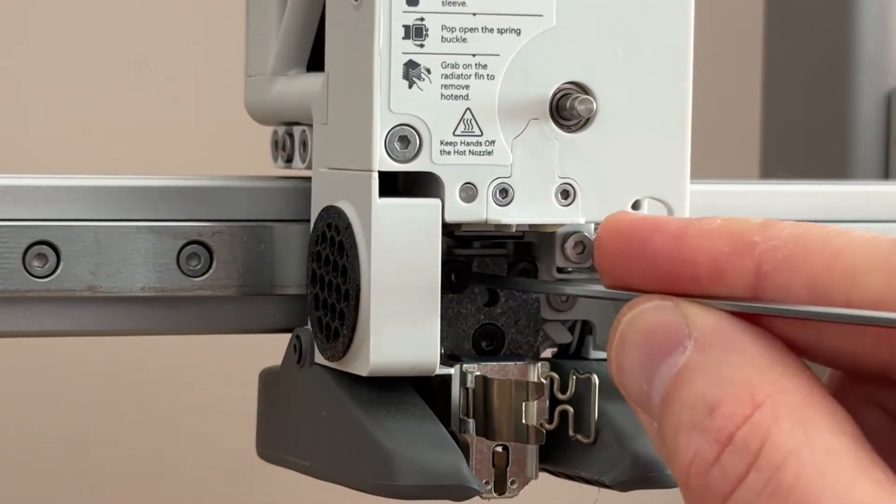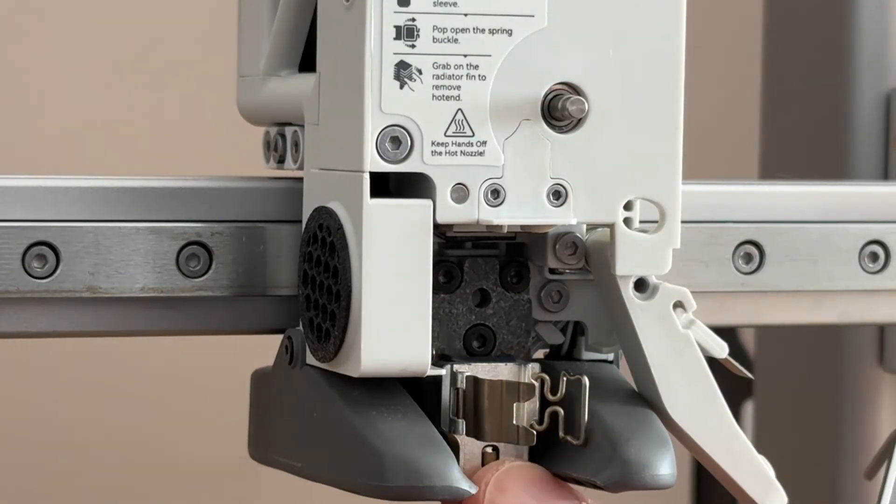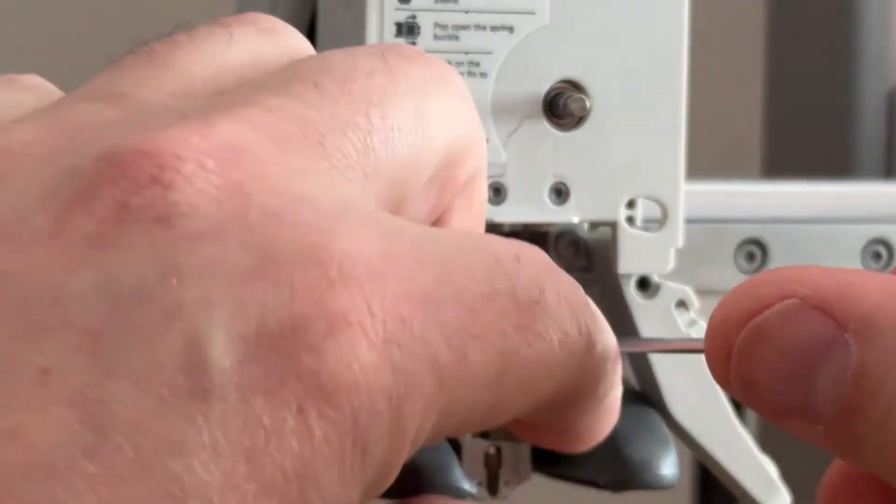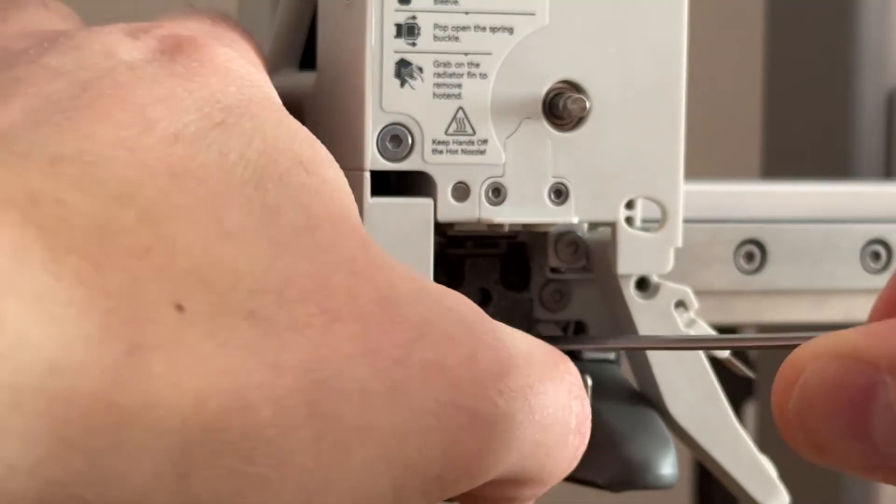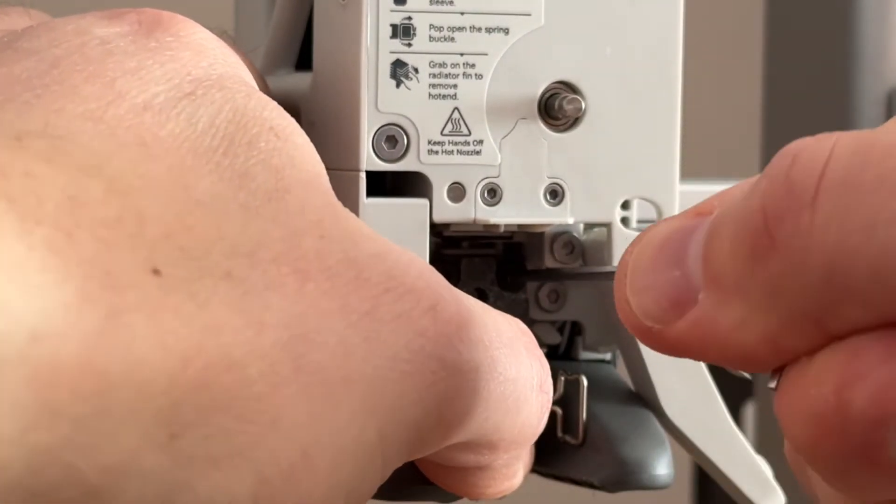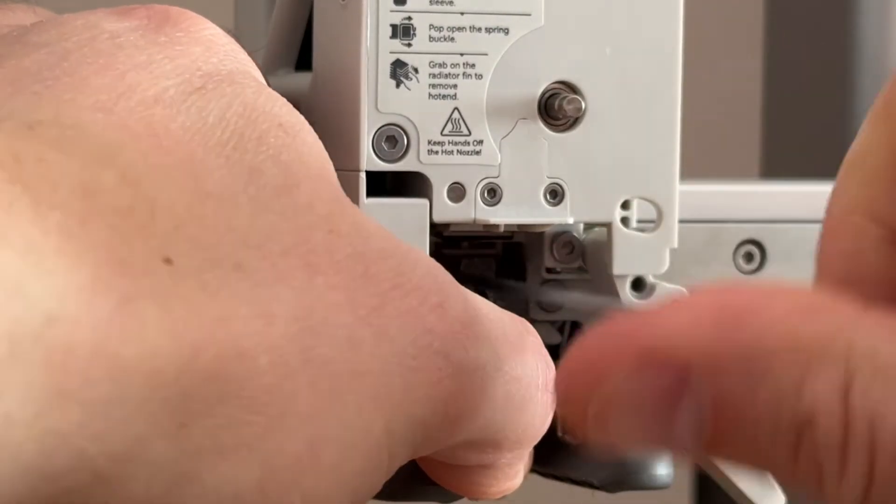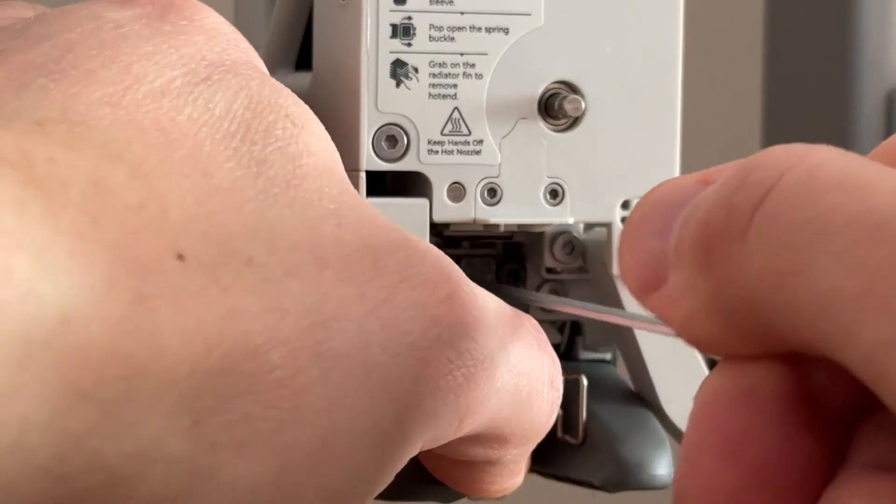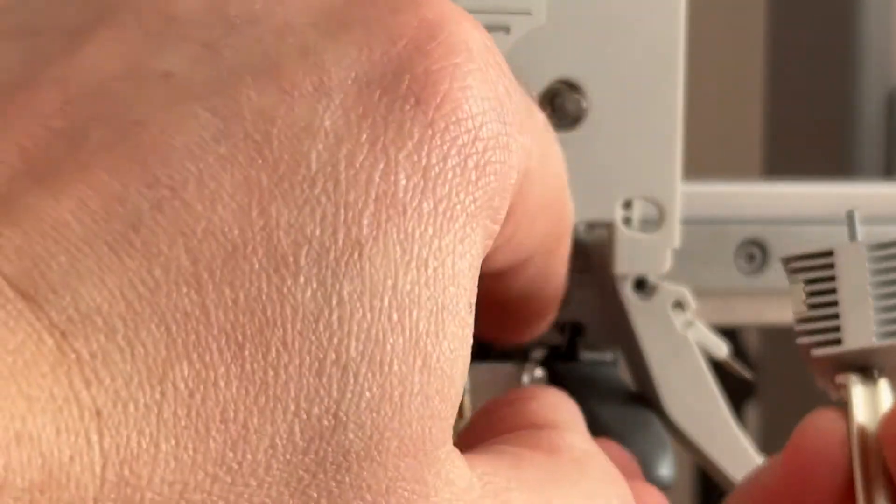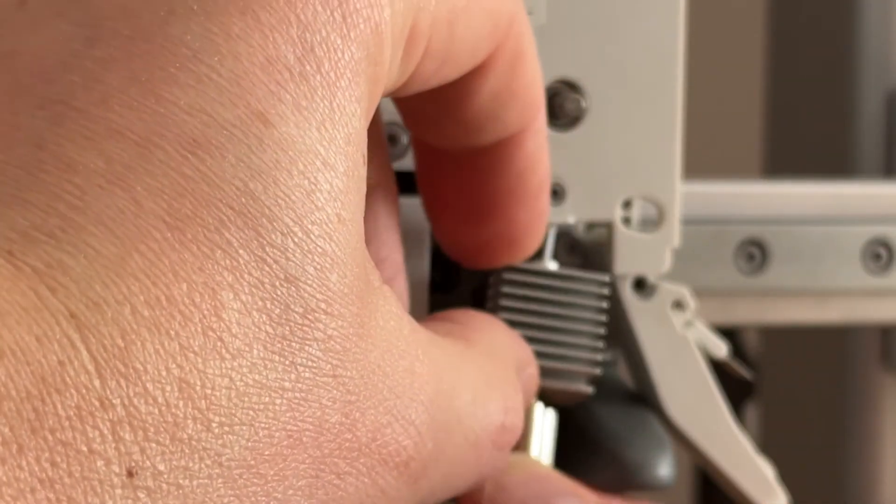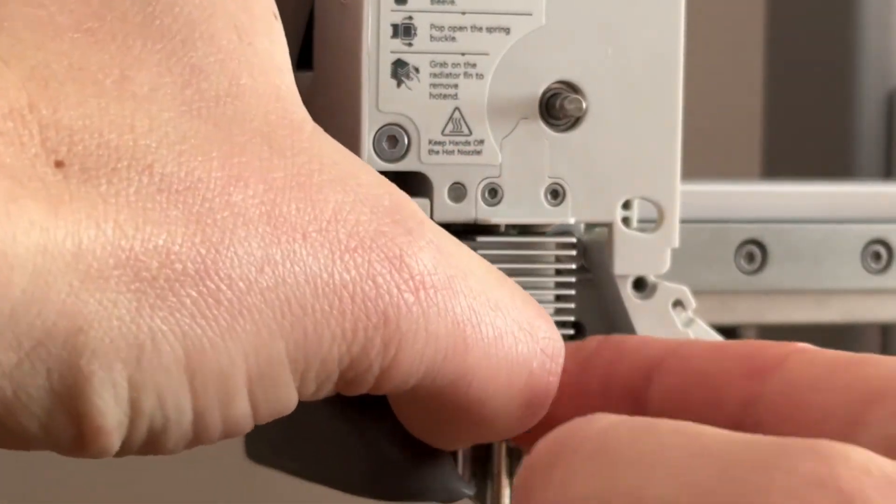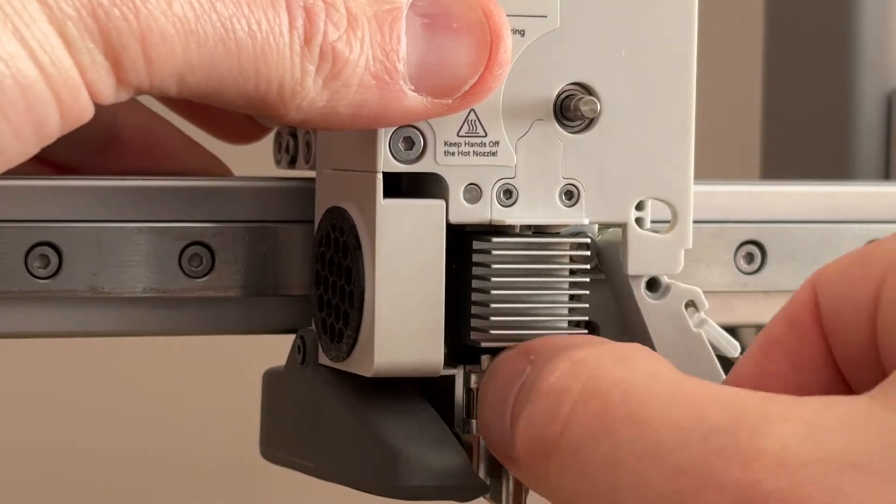These three screws here at the back, that's what holds this plate onto the arm. If they're loose, you're going to end up with poor extrusion or artifacts on your prints. So you want to make sure all three of those are tight. We're just going to throw this back in just to test make sure it's right. Yep, that sorted that.